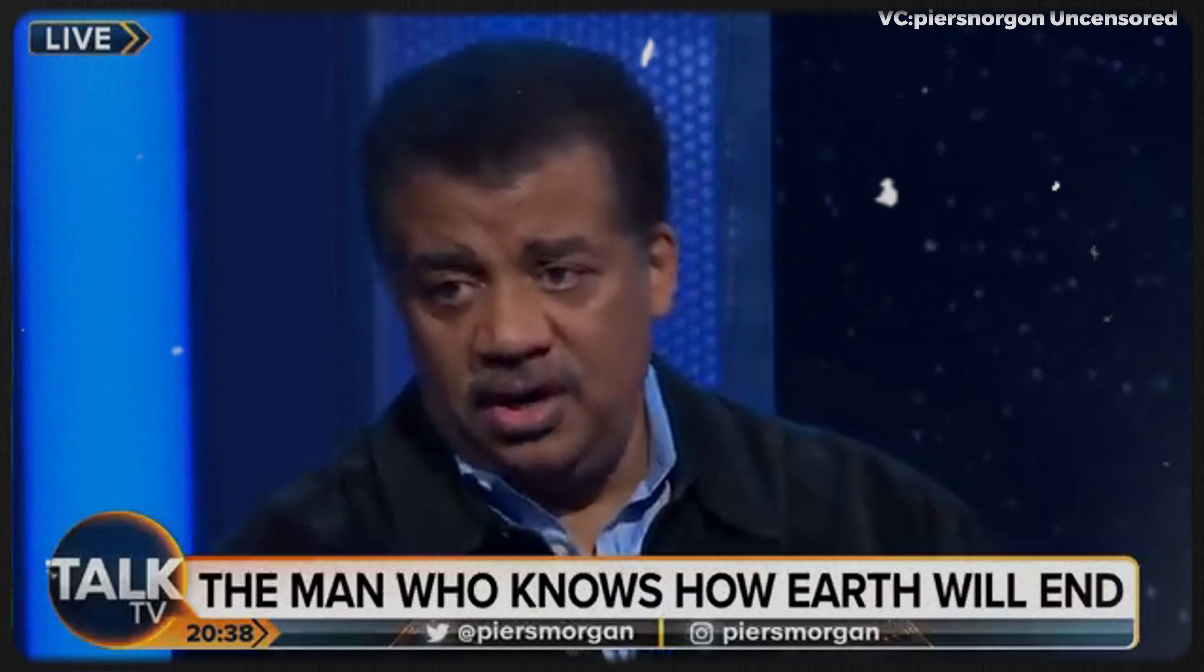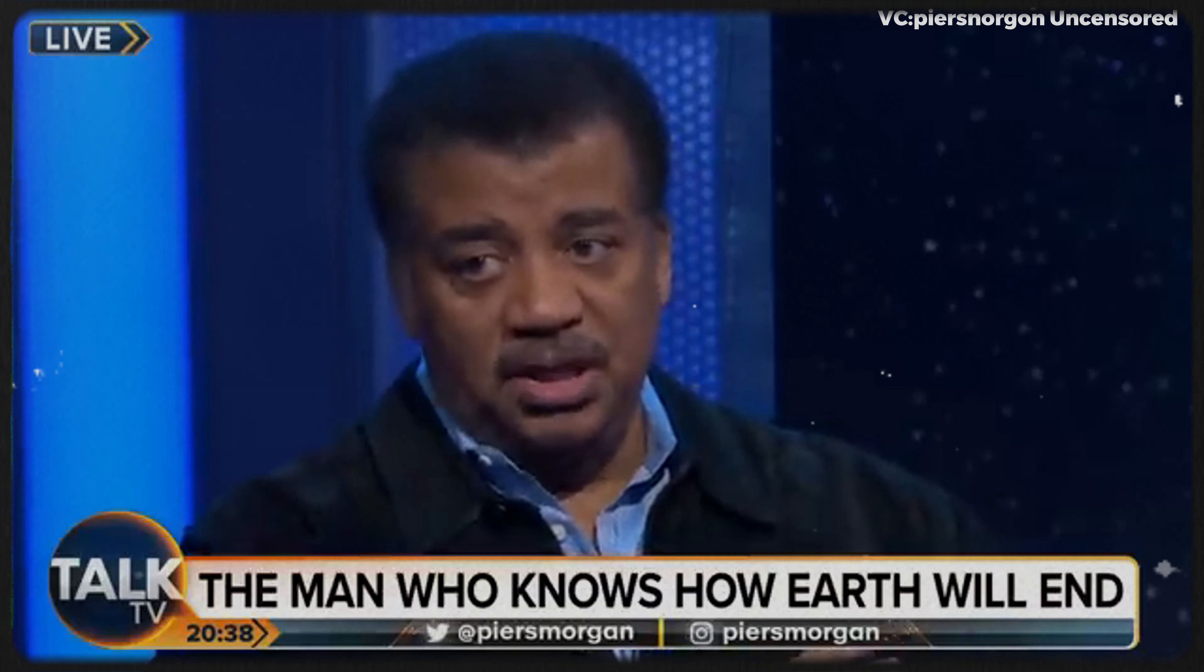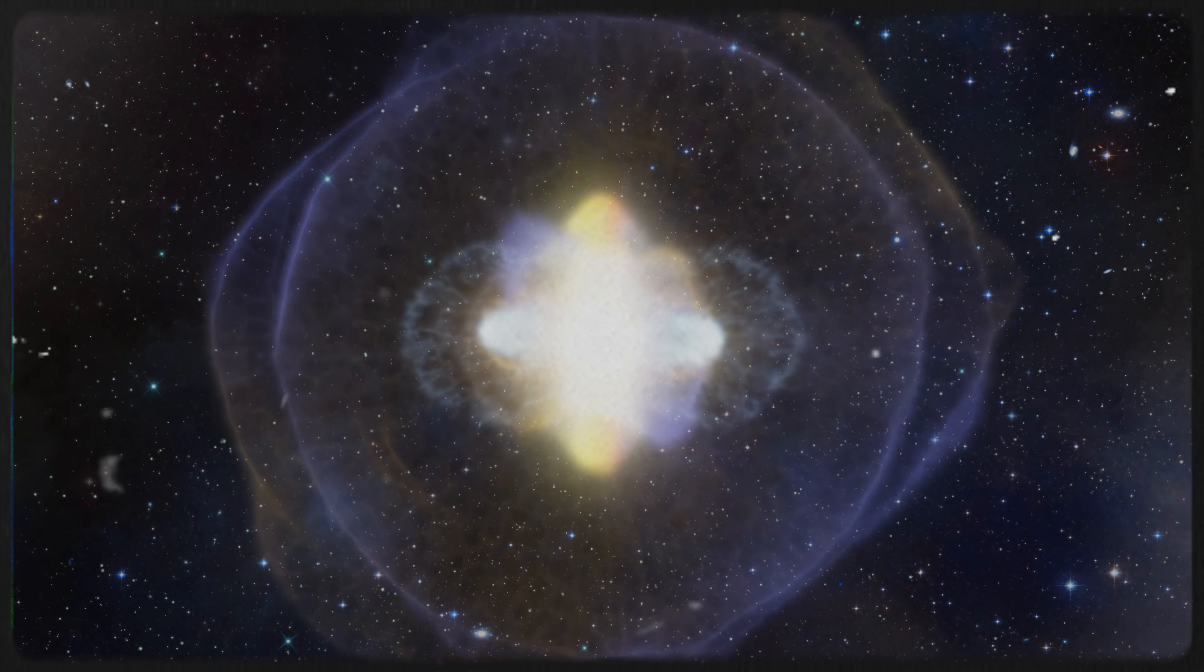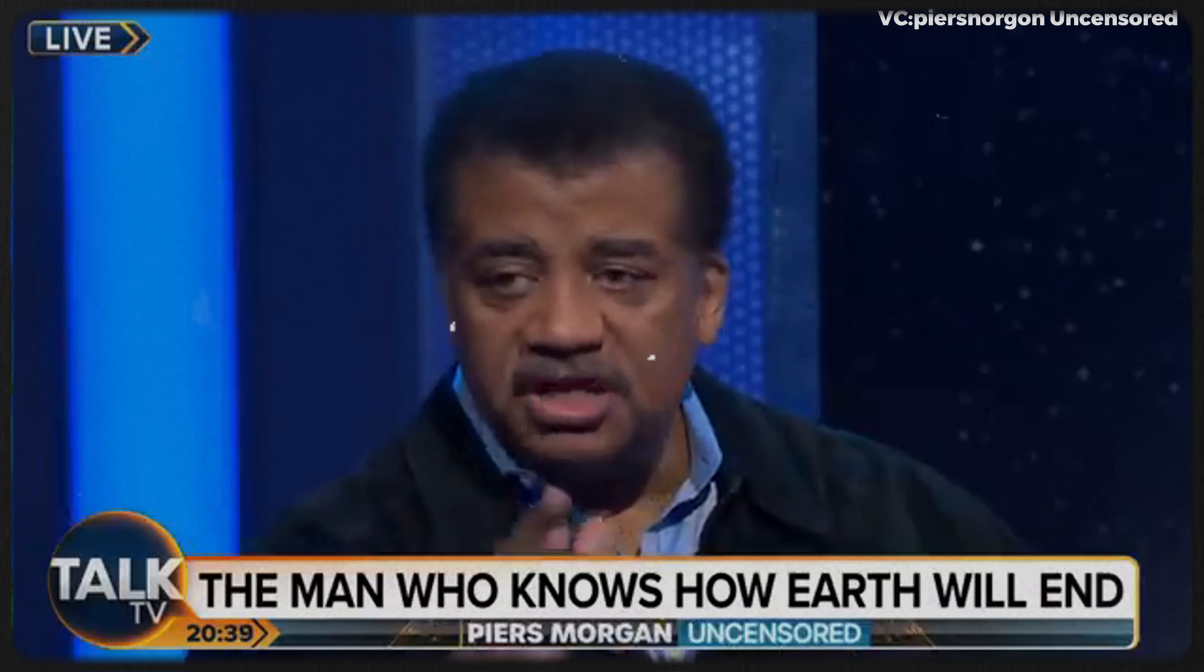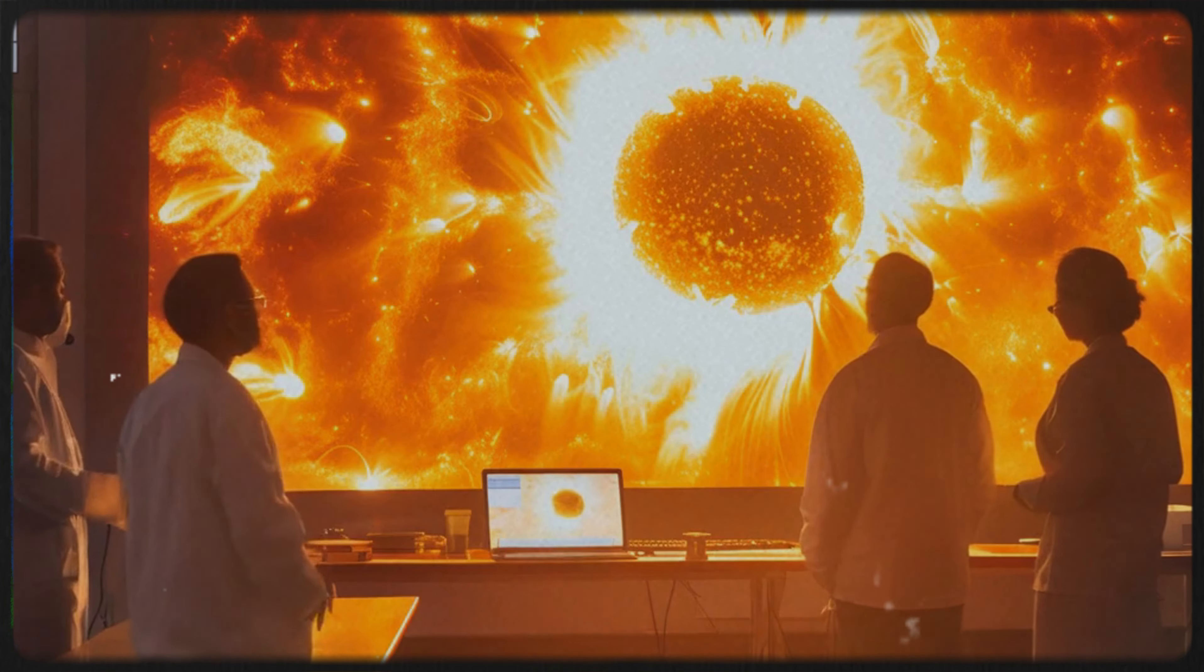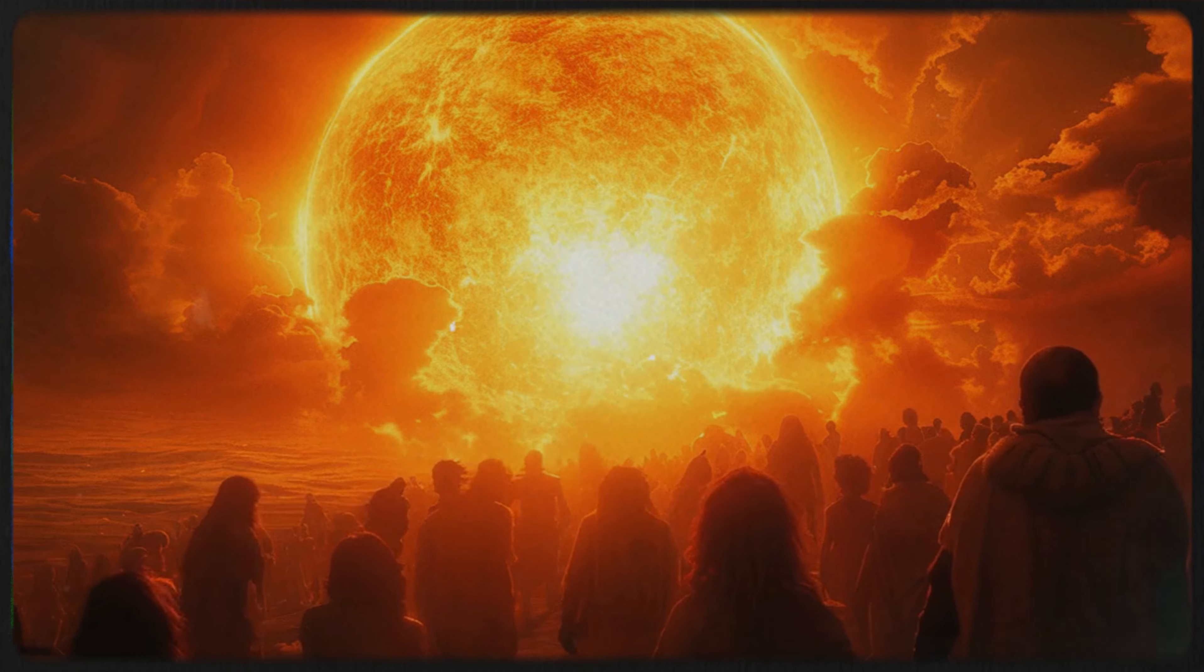Any star will run out of fuel in its core and starts changing, bloating, getting so large that it will engulf the orbit of Mercury and Venus and come very close to Earth. So imagine looking on the horizon and sunrise is half the sky.